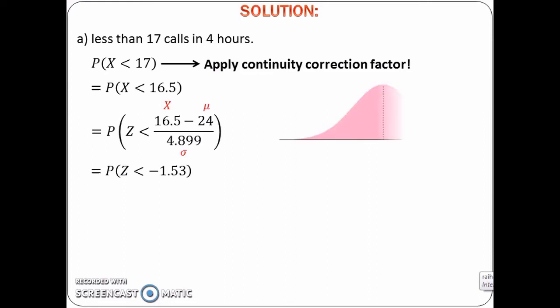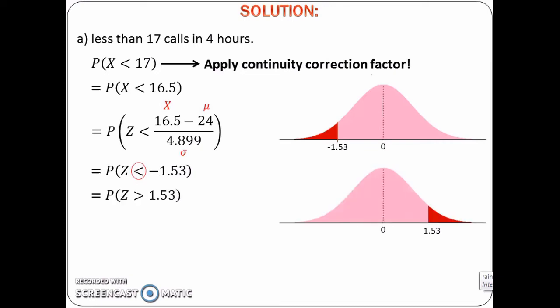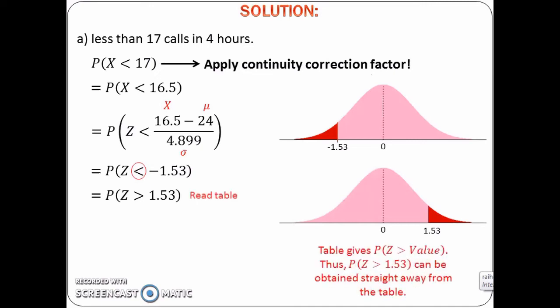After that, draw a bell-shaped graph with 0 at the center. Plot negative 1.53 on the graph, draw a vertical line, and shade the region of probability that we want to find. The region of probability depends on the inequality sign. Because we want to find the probability of z less than negative 1.53, the region would be to the left of negative 1.53. To find this probability, change it to probability of z greater than positive 1.53 and read the probability from the table.